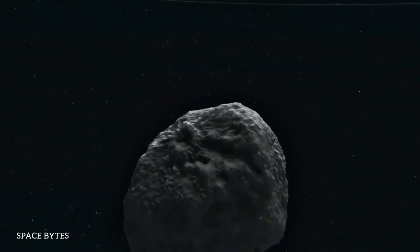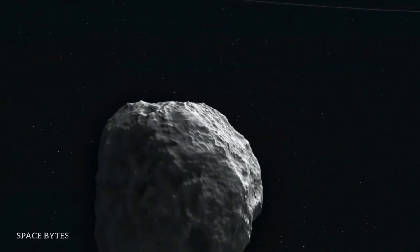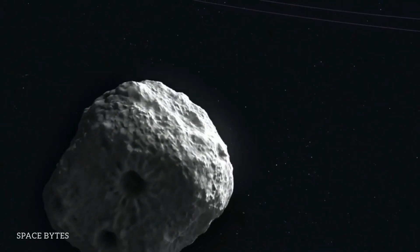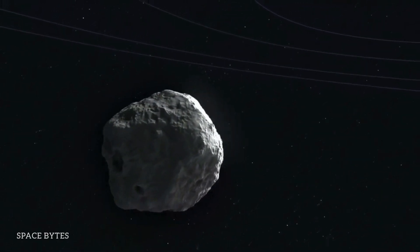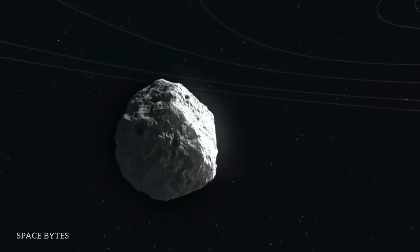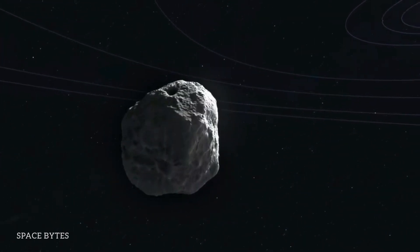NASA has detected another asteroid heading towards the Earth at a much faster pace than the previous ones. This comes after the god of destruction Apophis and the biggest asteroid of the year 2021, which passed through the Earth.